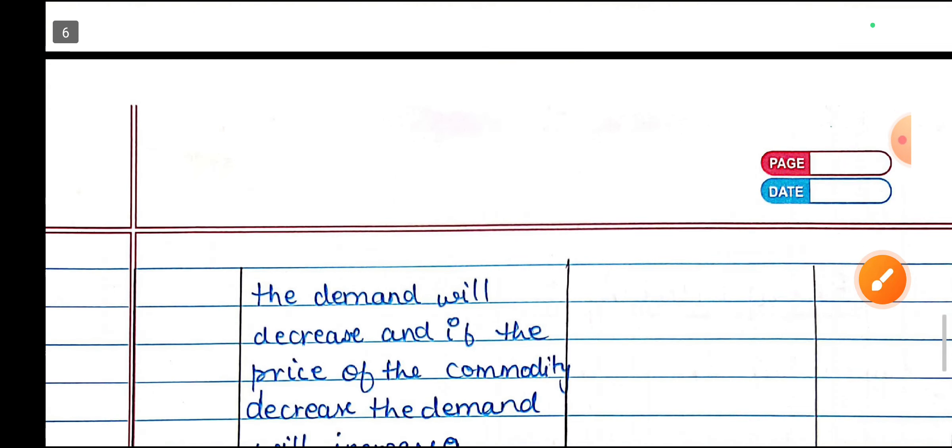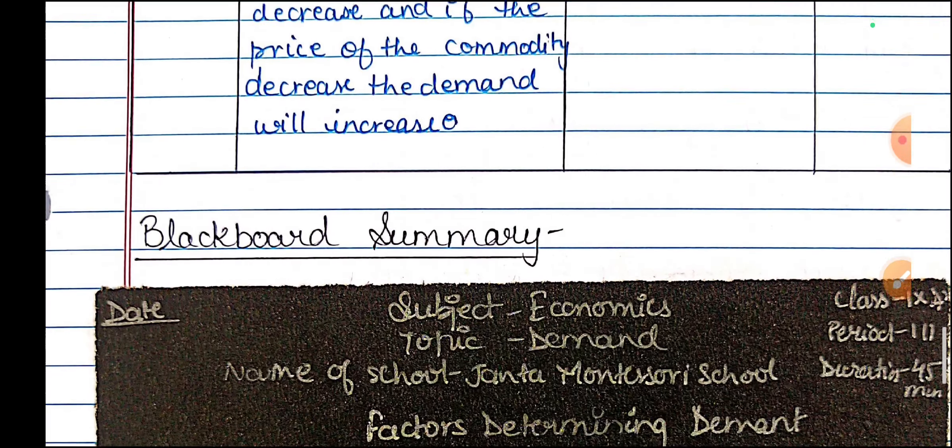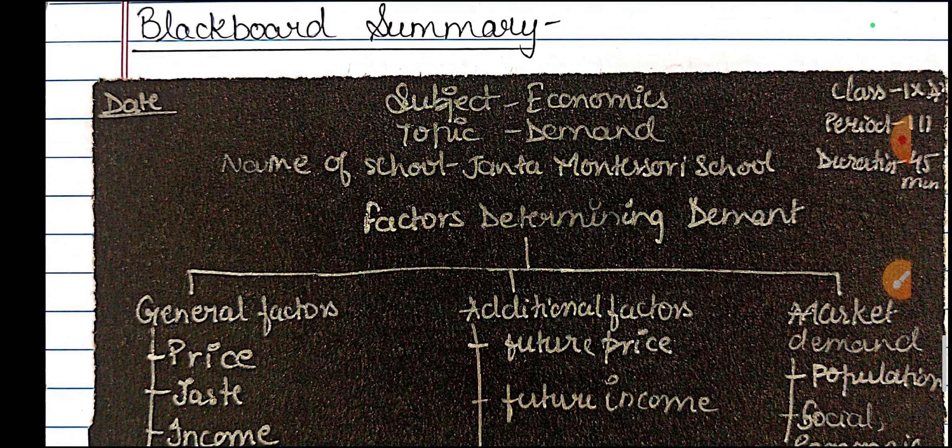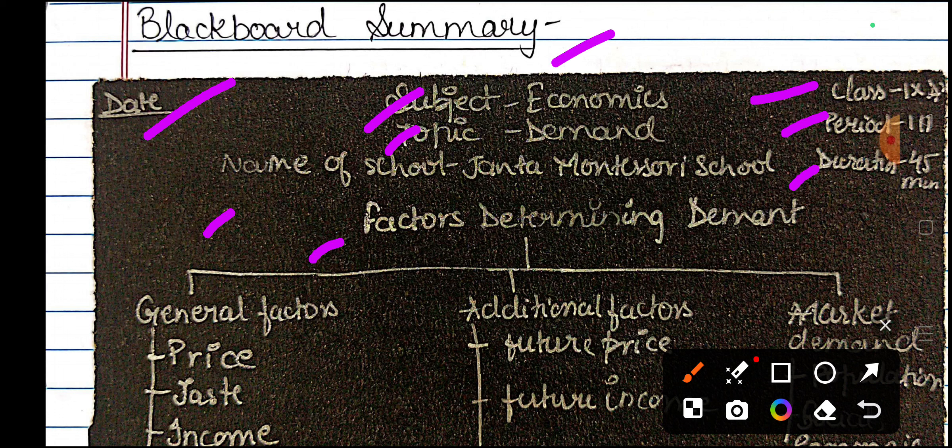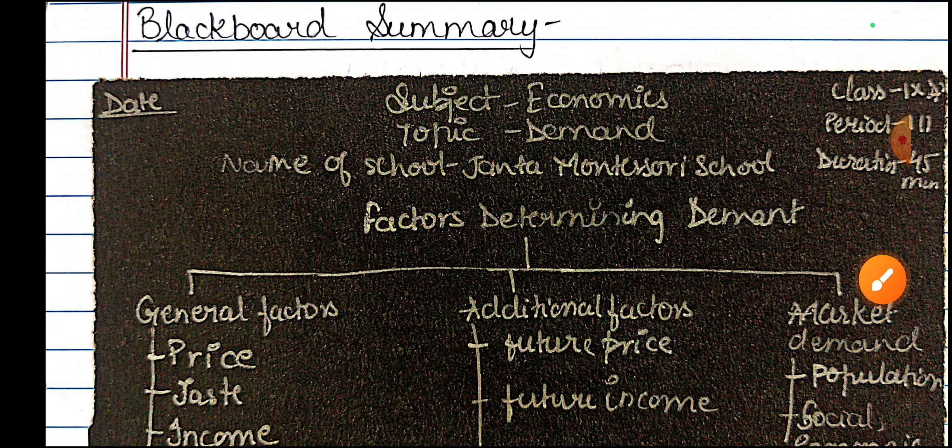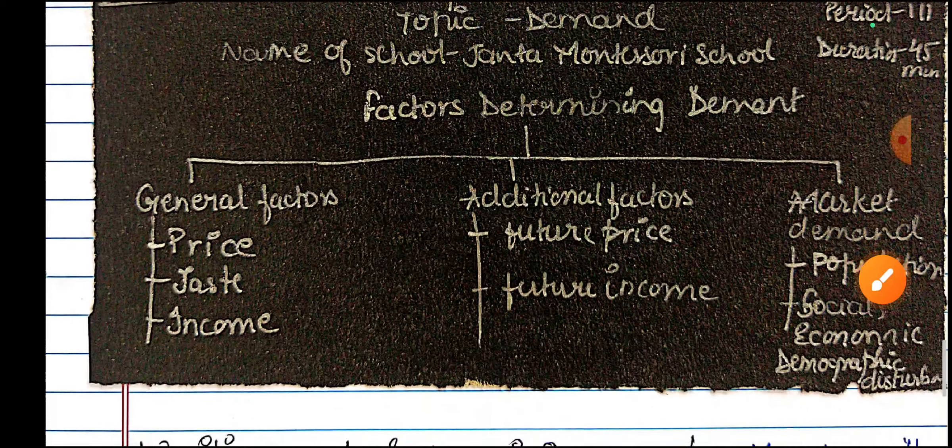After this, there will be a blackboard summary, as you all are watching. So there will be entry: class, period, duration, date, name of school, factors. This is a flow chart type. You expect that you will make it there. So this will be given.